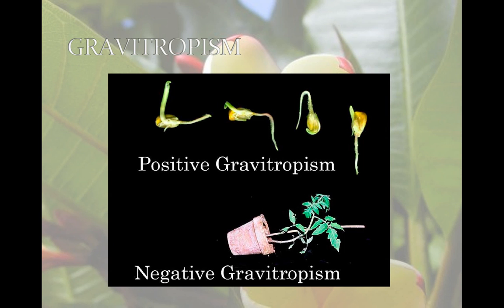Gravitotropism is a response to gravity. Shoots grow up — that's a negative response to gravity — and roots grow down, which is a positive response to gravity. The hypothesis is that gravity pulls organelles containing dense starches to lower points of the cells, which redistributes the auxin. If you hung a plant upside down, the roots would turn and grow down, and the stems would turn and grow up.